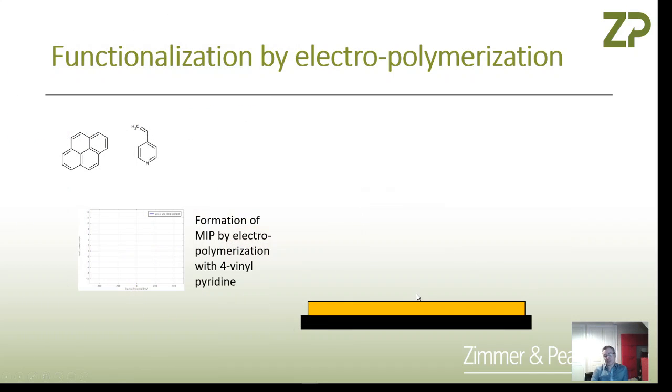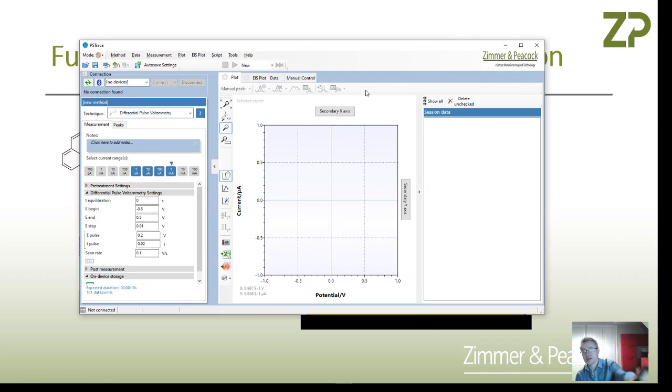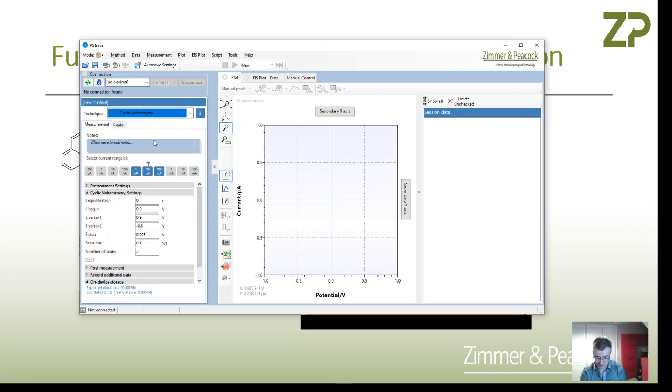He's got 4-vinyl pyridine and pyrene in solution, and he's using a technique called cyclic voltammetry. The nice thing about electrochemistry is we've got such a host of techniques. This software drives potentiostats like this, and you can just choose cyclic voltammetry and set the parameters to do the polymerization.